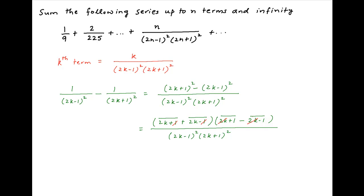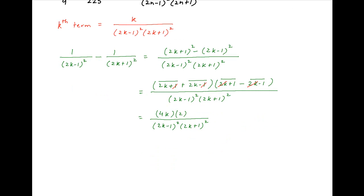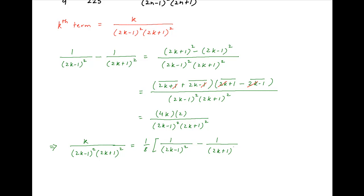This simplifies to 4k times 2 divided by (2k minus 1) whole square times (2k plus 1) whole square. Dividing both sides by 8, we get the result: k upon (2k minus 1) whole square times (2k plus 1) whole square is equal to 1 upon 8 times [1 upon (2k minus 1) whole square minus 1 upon (2k plus 1) whole square].